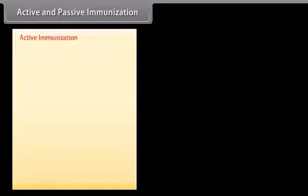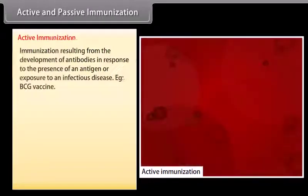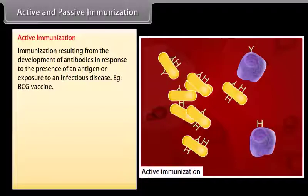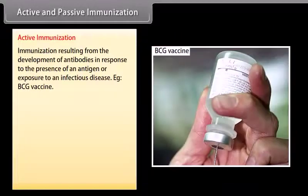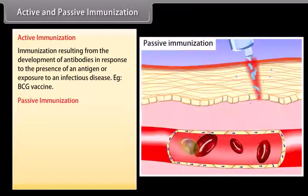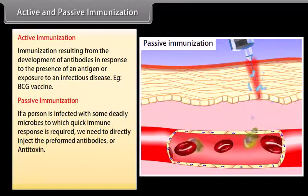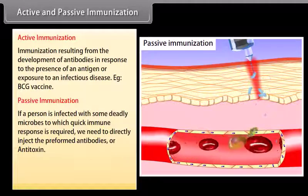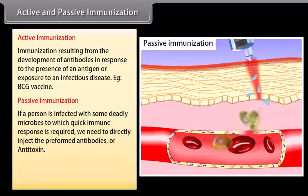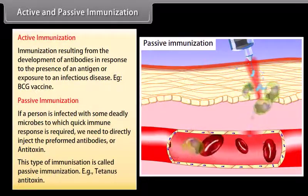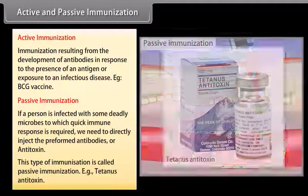Active immunization results from the development of antibodies in response to the presence of an antigen or exposure to an infectious disease — for example, the BCG vaccine. Passive immunization is when preformed antibodies or antitoxin are directly injected for a quick immune response against deadly microbes — for example, tetanus antitoxin.